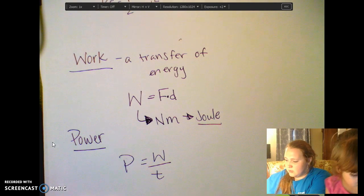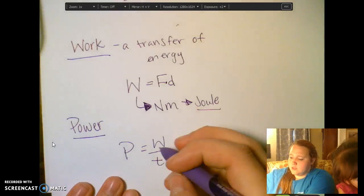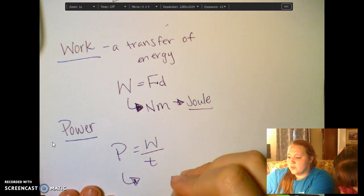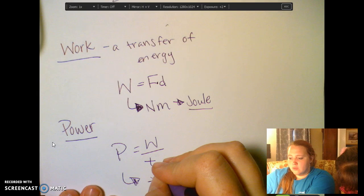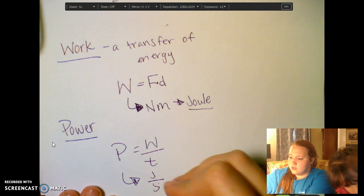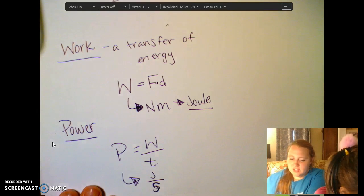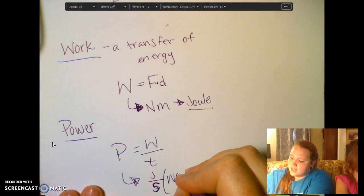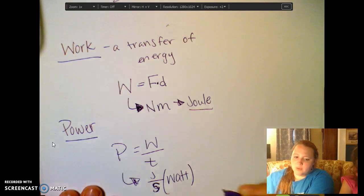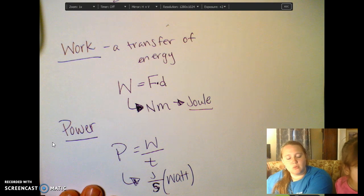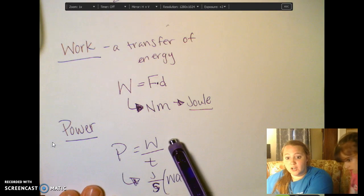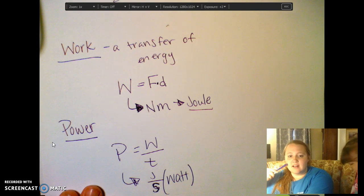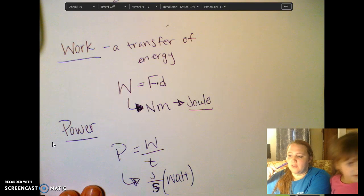Now if we were to look at those units, those units would be the units for work, which are joules, over the units for time, which are seconds. So we have joules per second. Now the physics world likes to call that a watt. So when you look at light bulbs and you see a 100-watt light bulb, that is the amount of power, that's the amount of work per second, or joule per second, that that light bulb is going to be able to give you.